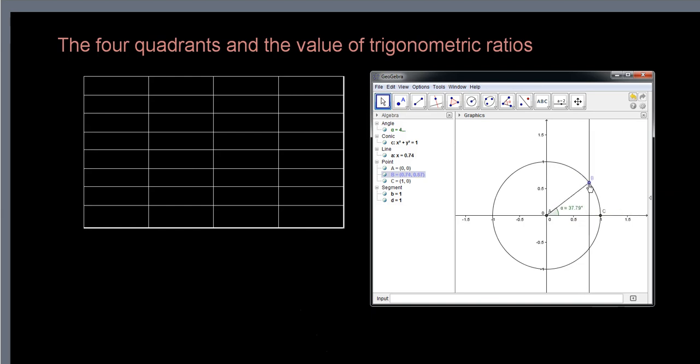For example, if the location of this point is at theta equals 32 degrees, then the y coordinate of this point, which is 0.53, is the sine function of 32 degrees, and the x coordinate of this point, 0.85, is equal to cosine of 32 degrees.